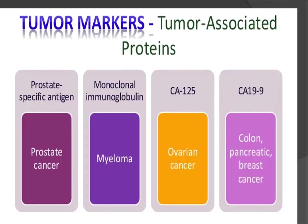Tumor-associated proteins include: PSA (prostate specific antigen), increased in prostate cancer; monoclonal immunoglobulin, increased in myeloma; CA-125, increased in ovarian cancer; and CA-199, increased in colon, pancreatic, and breast cancer.